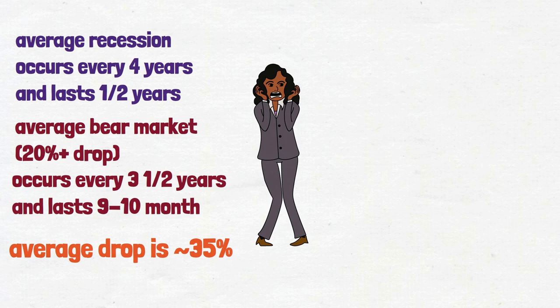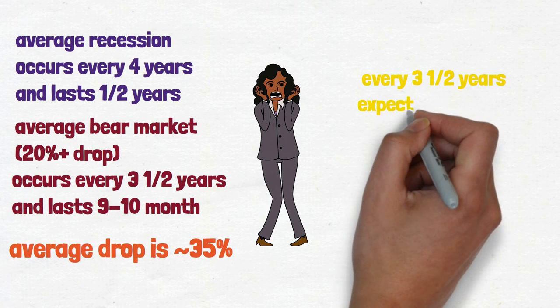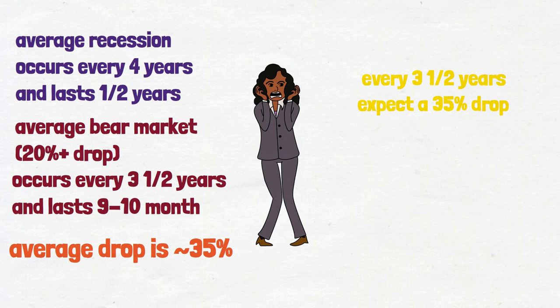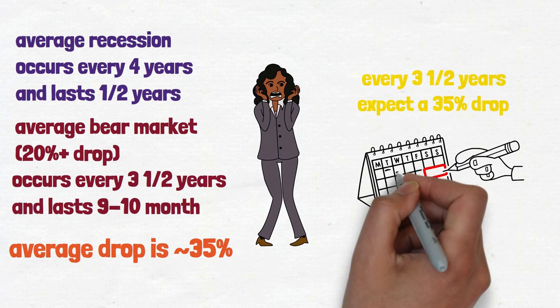In simple terms, every three and a half years you can witness the market dropping by an average of 35%. But don't worry, because the stock market usually tends to recover in less than a year.